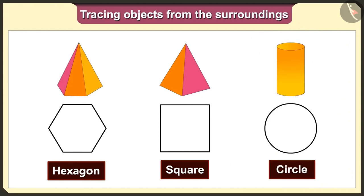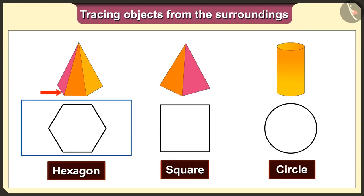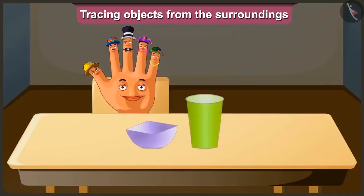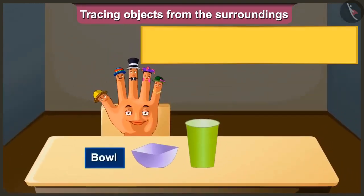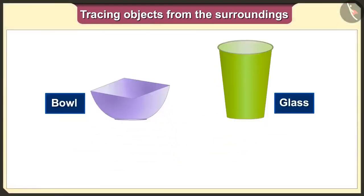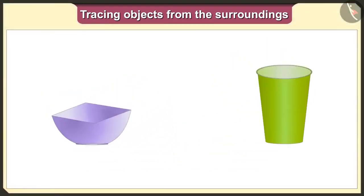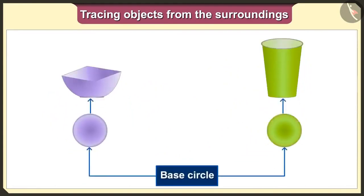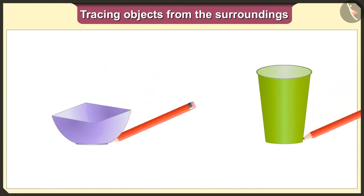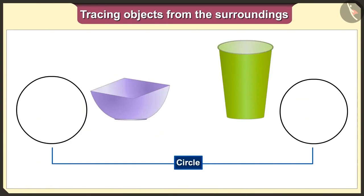So when we trace these solid shapes, we will get the shapes hexagon, square and circle according to their bases. Now let's look at another example. Which shapes would we get if we put this bowl and glass straight and upside down and then trace them? If we keep the bowl and glass straight, their base is a circle. So if we keep the bowl and glass upward and trace them, we will get the circle shape.